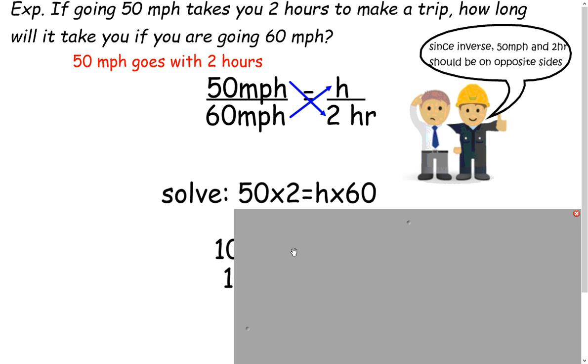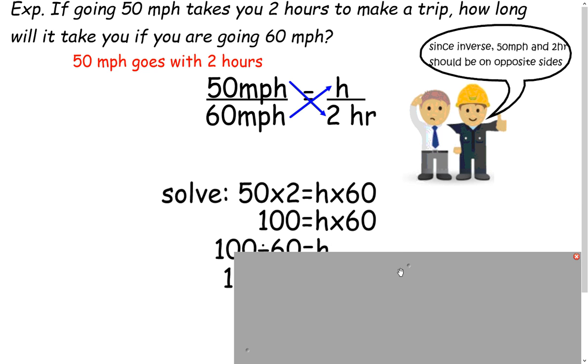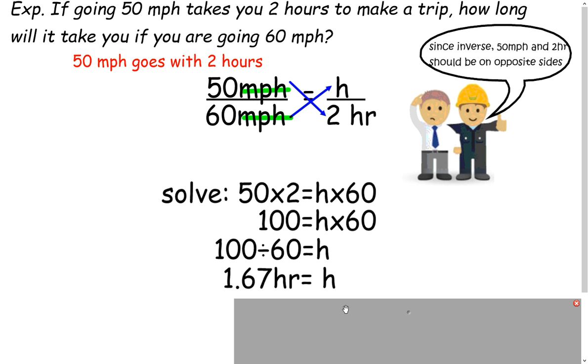And to solve it, we're going to do 50 times two hours equals 60 times h. And we get 100 equals h times 60. And I want you to note that as we're doing this, these units for miles per hour cross out. So what you're going to have left over is hours. 100 divided by 60 is going to give you your time, and you end up with 1.67 hours or one and two thirds hours.